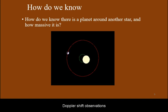Doppler shift observations of stellar spectra are used to detect the gravitational tug of extrasolar planets around their parent star.